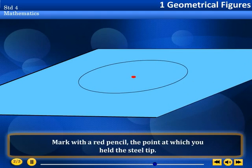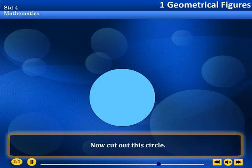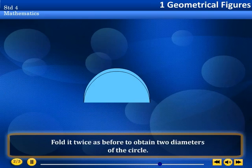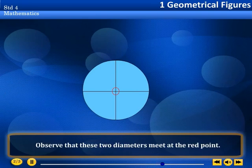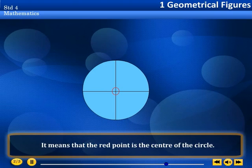Mark with a red pencil the point at which you held the steel tip. Now cut out the circle. Fold it twice as before to obtain two diameters of the circle. Observe that these two diameters meet at the red point. It means that the red point is the center of the circle.